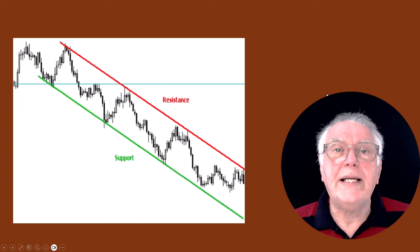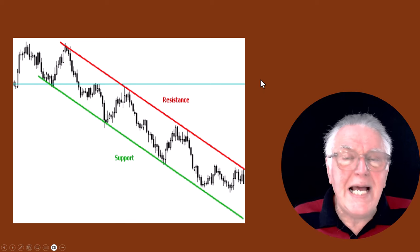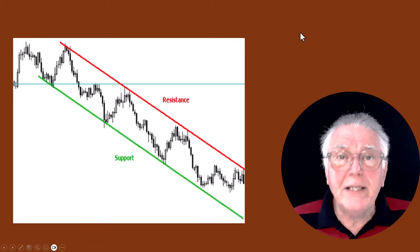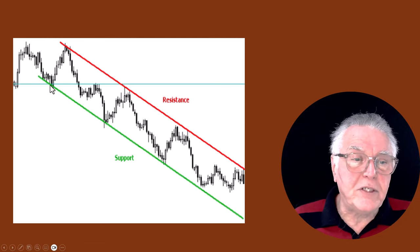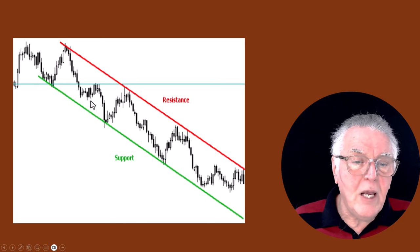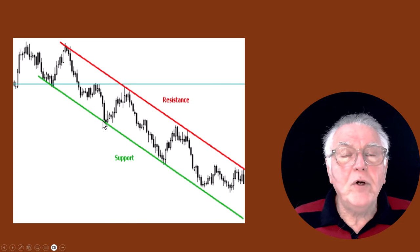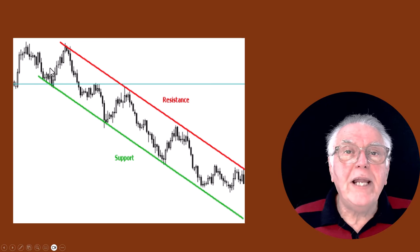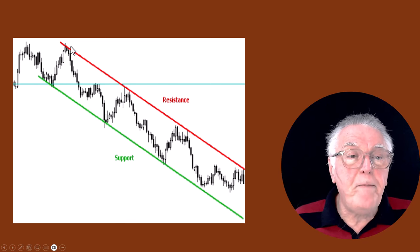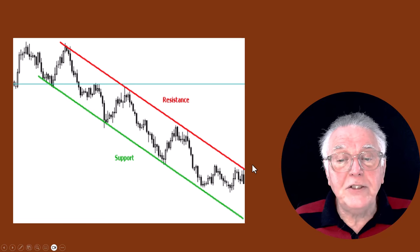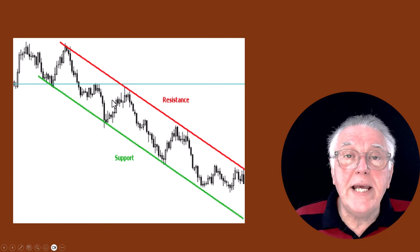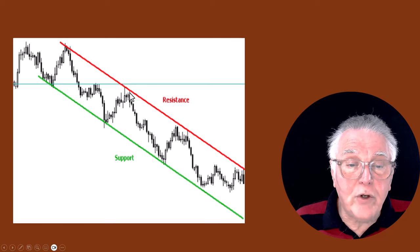The next technique is more or less a manual technique: channeling. All you need for a channel are turning points. Once you've got three turning points, you can draw a trend line over two of them, then draw a parallel line using the second turning point as your anchor, and you create a channel.